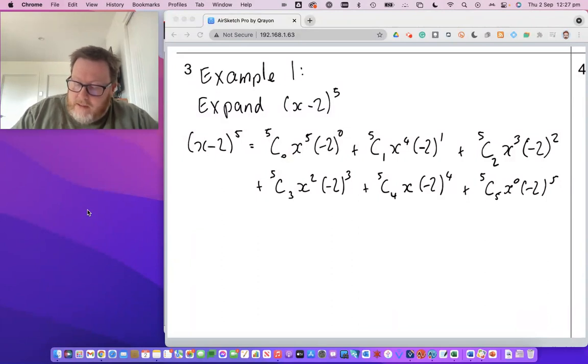Again just to point out this number and this number agrees every single time. This number stays the same and if I add these two powers together I get five. Four plus one is five. Three plus two is five. Two plus three is five. One plus four is five. Zero plus five is five. So they're always adding up to five so you can always check to see that you're getting it right.